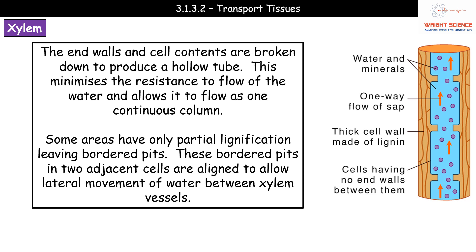Another feature of xylem vessels is that they no longer have end walls. Whereas you might picture cells stacked end to end with end walls, those walls have all been broken down in xylem. When the end walls are broken down, the cell contents are also removed, changing from stacked individual cells into one long, continuous, hollow tube. This removes resistance to the flow of water, so water and mineral ions can flow as one continuous column.